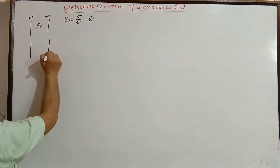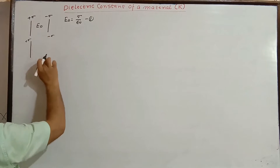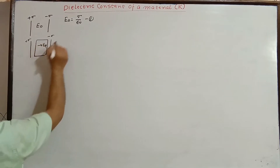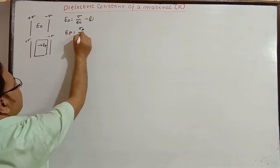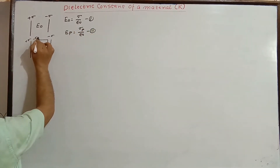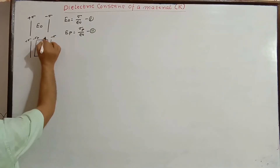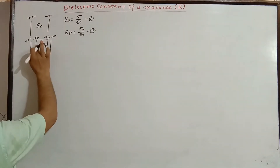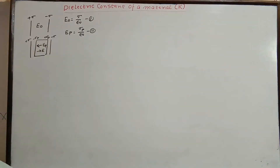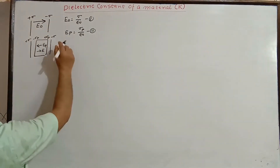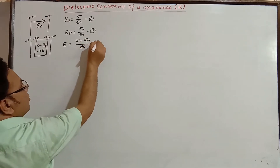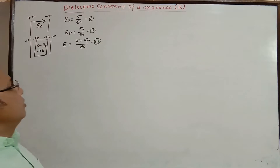In the second case, we placed a dielectric between the two sheets. The polarized electric field was Eₚ = σₚ/ε₀, where σₚ is the polarized surface charge density on the surface of the dielectric. The reduced value of electric field E inside the dielectric is the difference of the two: E = (σ - σₚ)/ε₀. These three things we are going to use here as well.